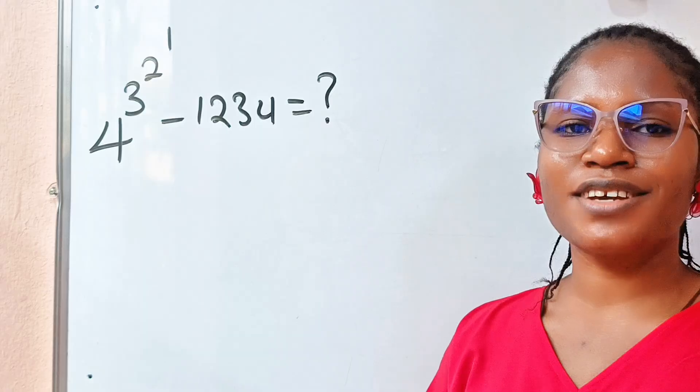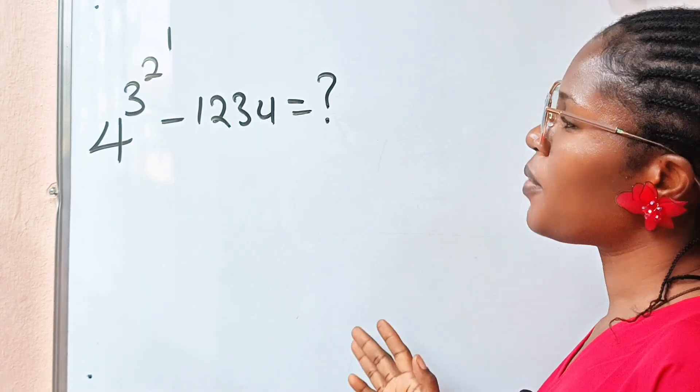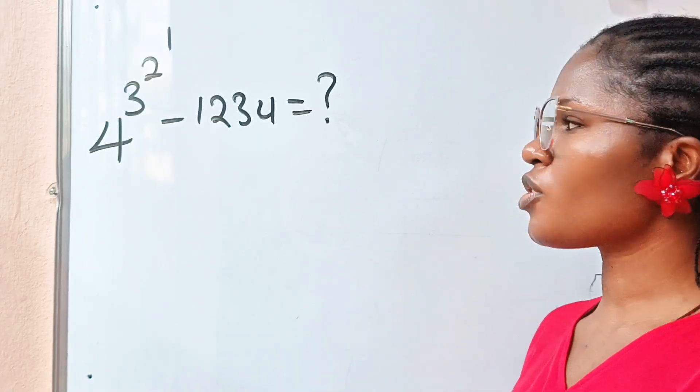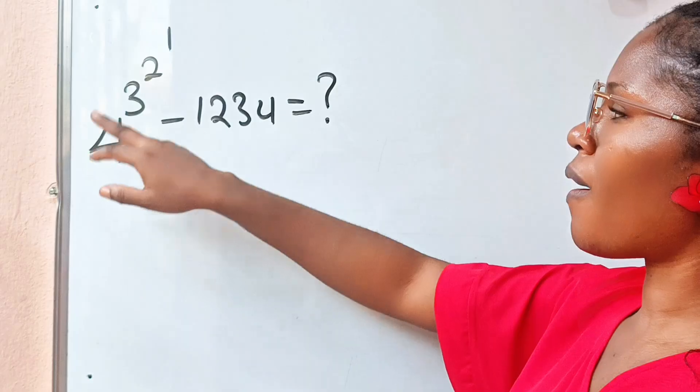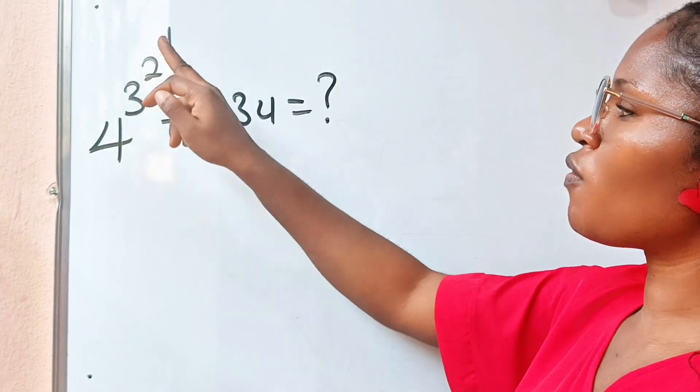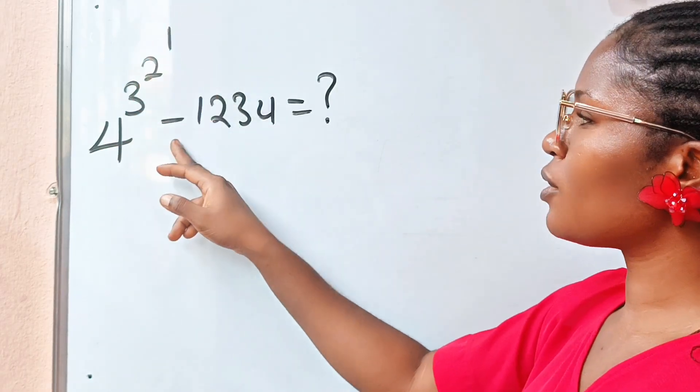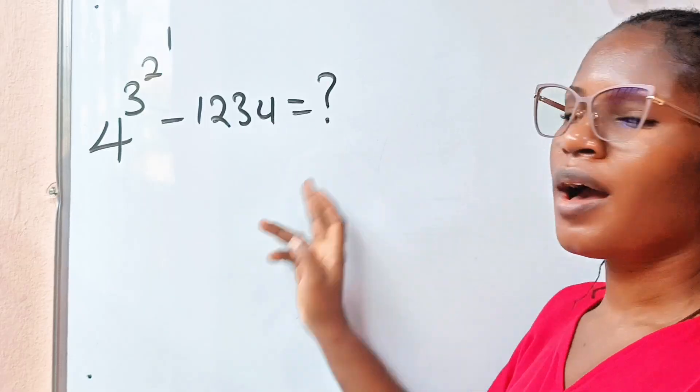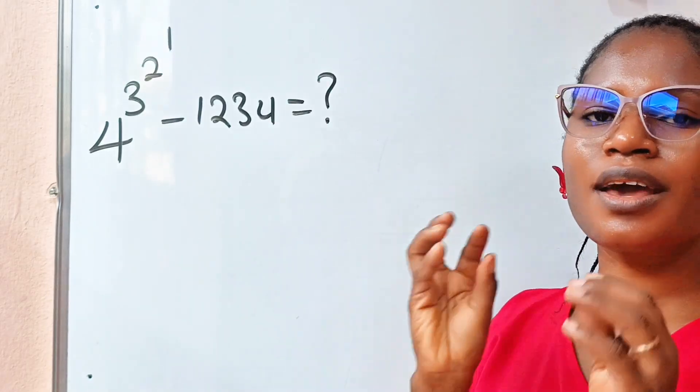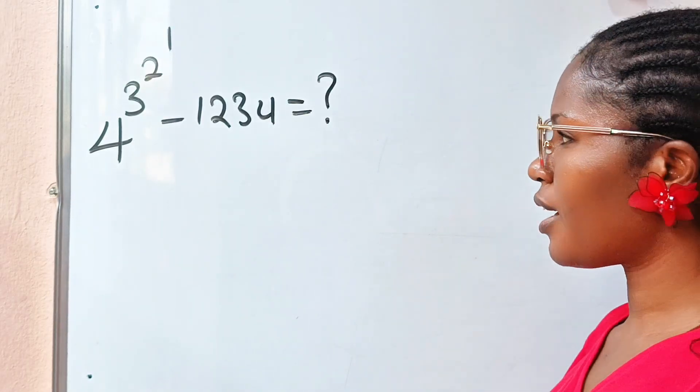Welcome back to my channel. This is an Olympiad question and we are asked to solve 4 to the power of 3 to the power of 2 to the power of 1 minus 1234 and you are asked not to use a calculator.